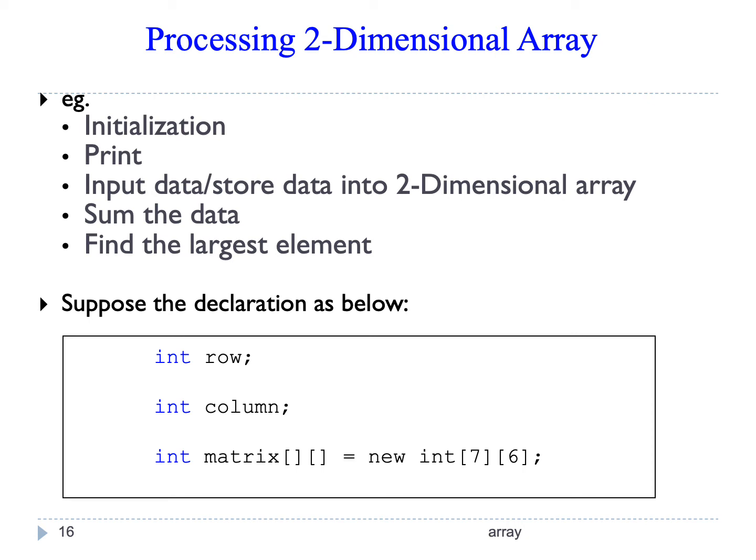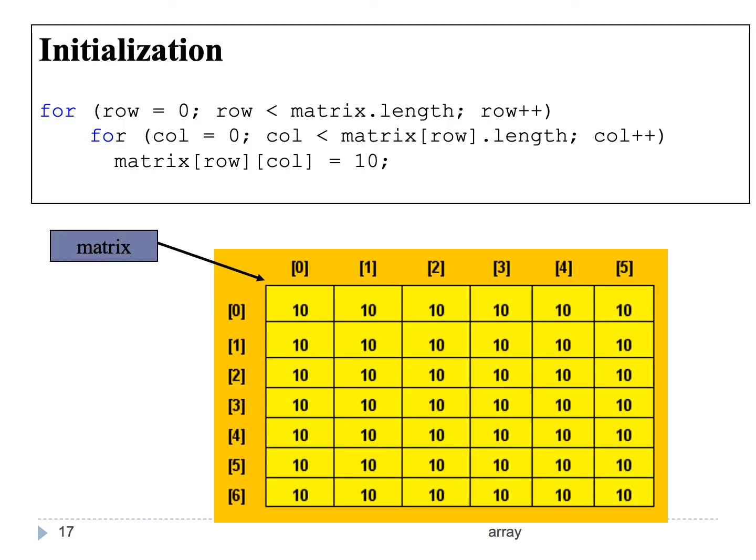Say we have int row, int column, and a two-dimensional array called int[][] matrix equal to new int with 7 rows and 6 columns. In a two-dimensional array, we access each row first, then each column within the row, so we use a nested for loop. The outer for loop goes through the rows and the inner for loop is for the columns. As we learned in the for loop topic, when we have a nested loop, it finishes the inner loop before going back to the outer loop.